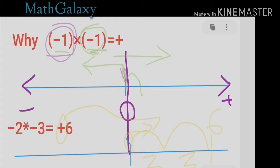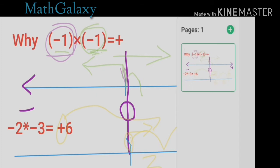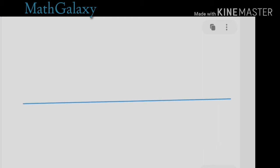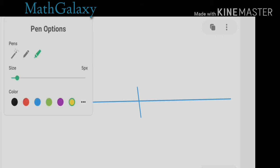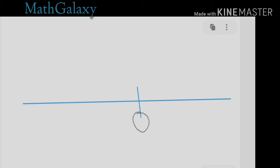Let me go to another page and show the exact thing once more on a number line. Here is zero. The first minus 1 tells us the direction we are facing — I am standing at zero, facing left, so left is currently my positive side. The second minus tells us to go backwards, meaning my direction is reversed, and I ultimately move to the right.